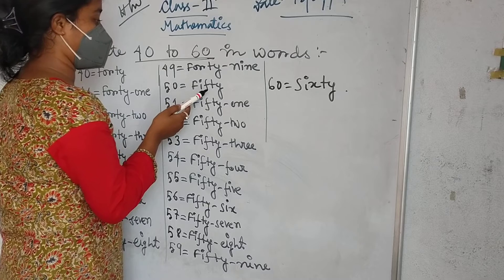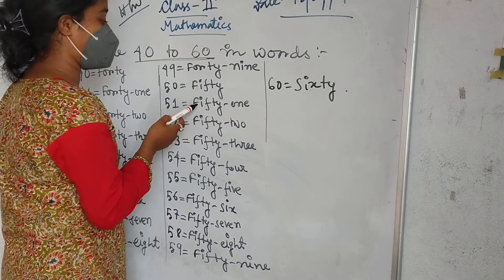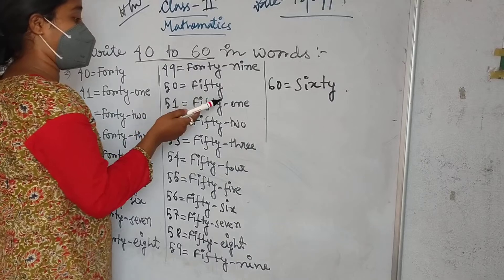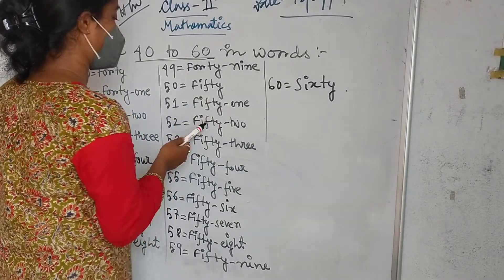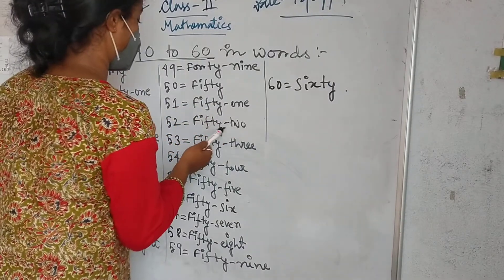Then 50: F-I-F-T-Y, fifty. Okay? Then 51: F-I-F-T-Y, fifty, O-N-E, one, fifty-one. Then 52: F-I-F-T-Y, fifty, T-W-O, two, fifty-two.